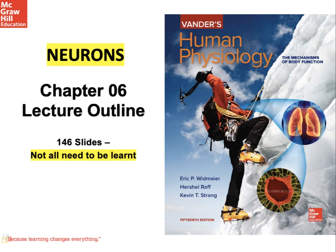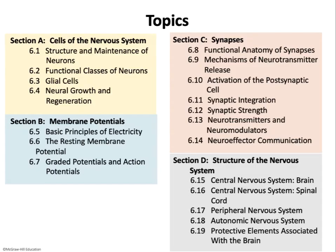Welcome back, students. This is Chapter 6 on neurons. The chapter is divided into four sections: Section A covers the anatomy of the nervous system; Section B covers membrane potentials and how they are regulated; Section C goes into detail about synapses and neurotransmitters; and Section D covers the structure of the nervous system — the brain, spinal cord, and components of the peripheral nervous system. Some material is too deep for this course and those slides are highlighted in grey, but we'll still talk about the information in case you need it.